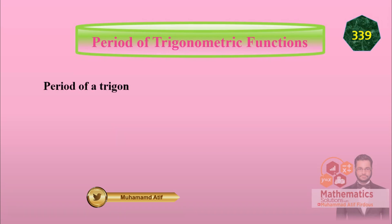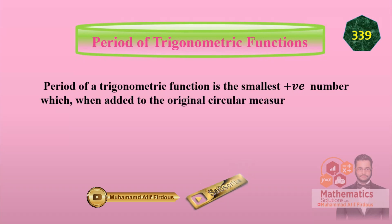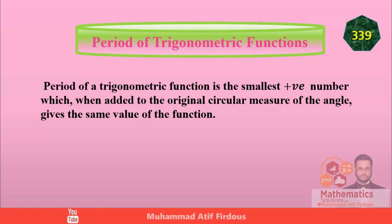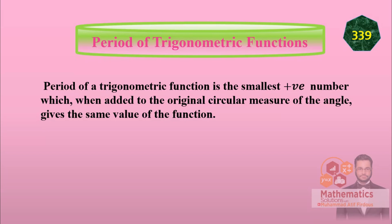So the period of a trigonometric function is the smallest positive number which, when added to the original circular measure of angle, gives the same value of the function. This definition is important — it can appear as an objective question. The smallest positive number — not negative — so mark this definition on page 339 and highlight it.